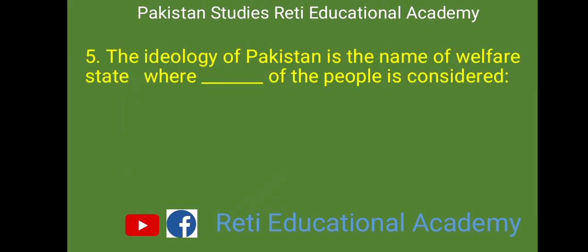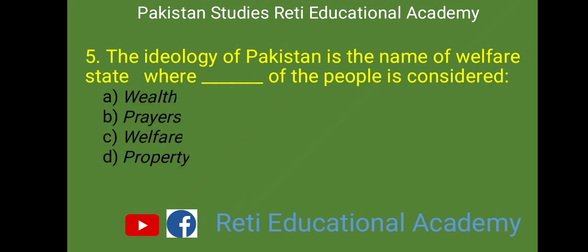MCQ number 5: The ideology of Pakistan is the name of a welfare state where the dash of the people is considered. A. Wealth, B. Prayers, C. Welfare, D. Property. And the right answer is C. Welfare.